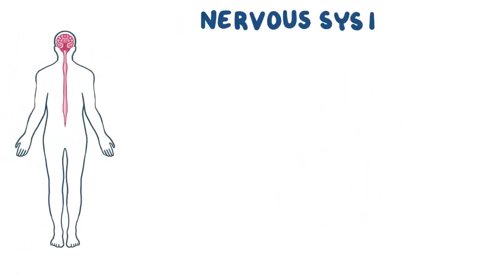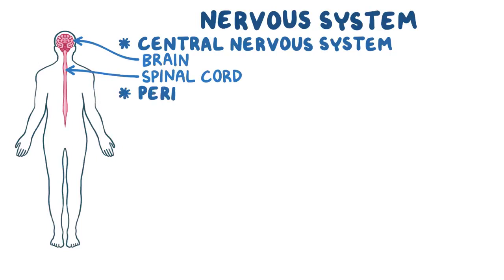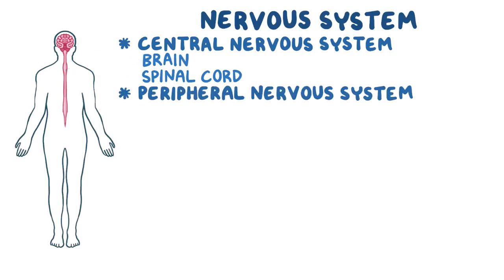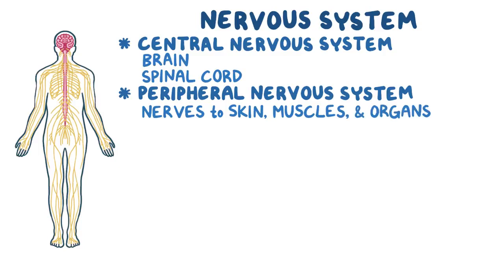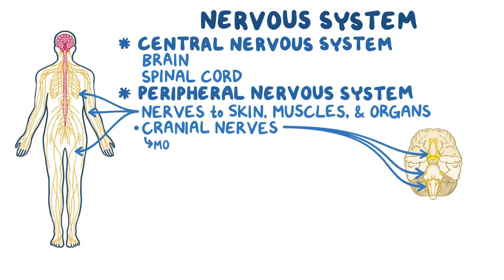Now, let's first talk about the nervous system. It consists of two parts: the central nervous system, which includes the brain and the spinal cord, and the peripheral nervous system, which includes the nerves that fan out from the central nervous system to reach the skin, muscles, and organs. Peripheral nerves that originate from the brain are called cranial nerves, and they're in charge of motor and sensory innervation of the head and neck.